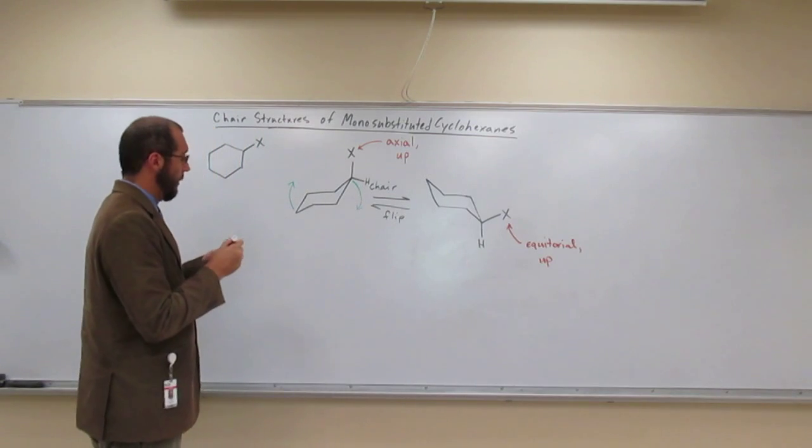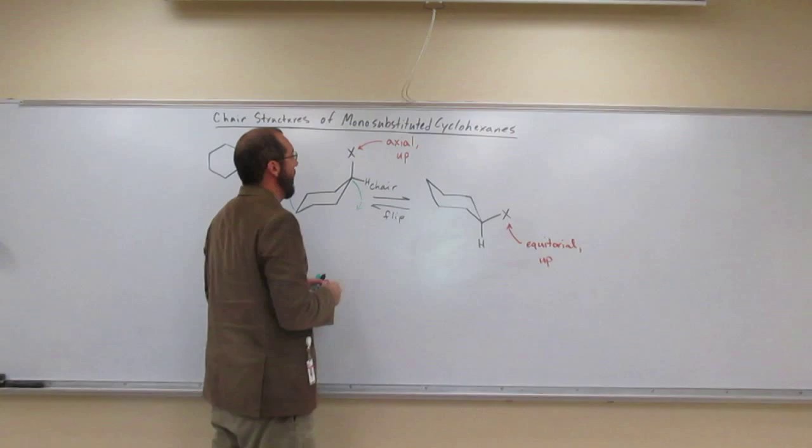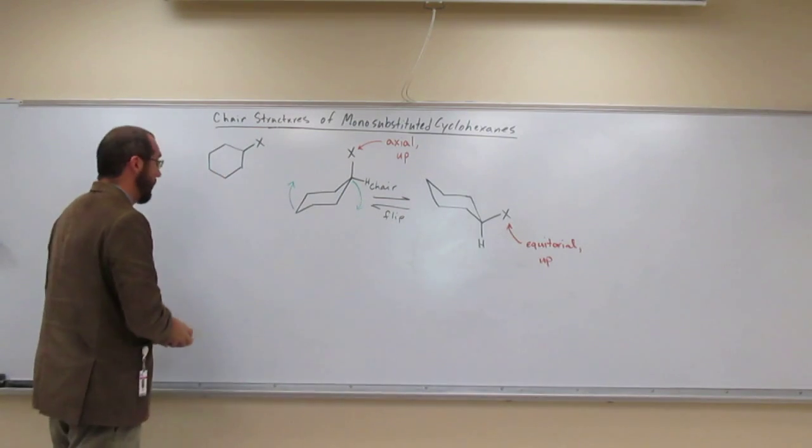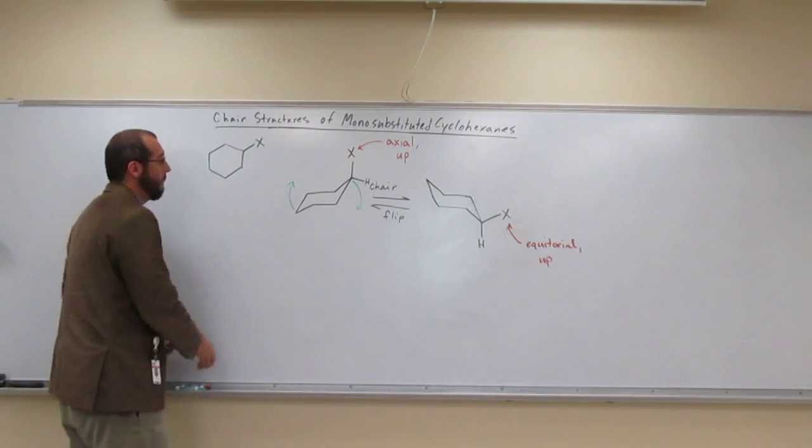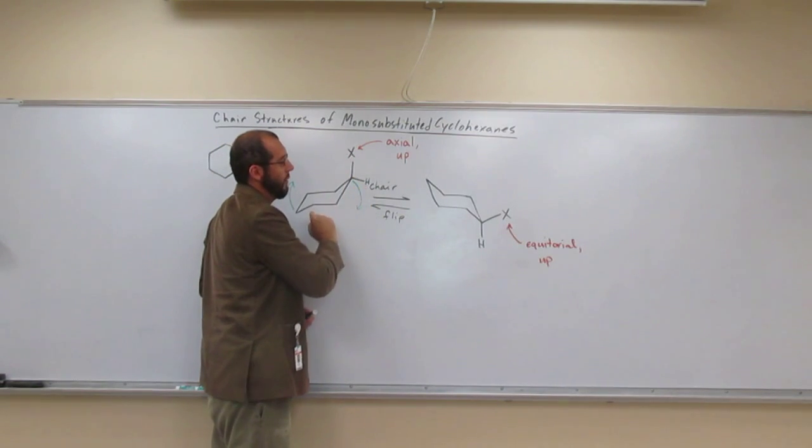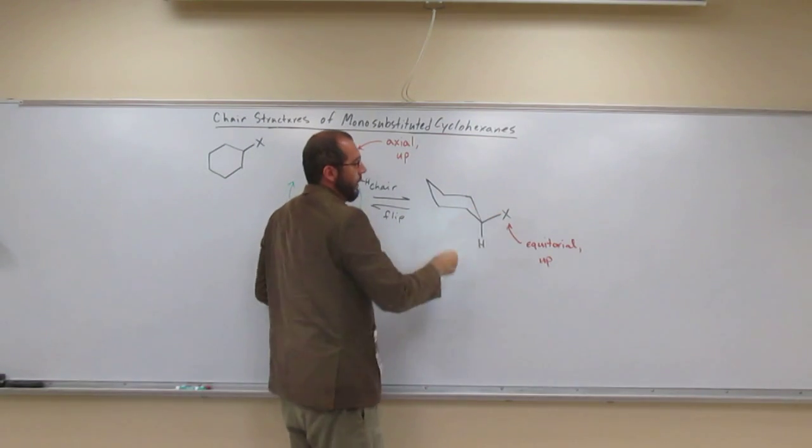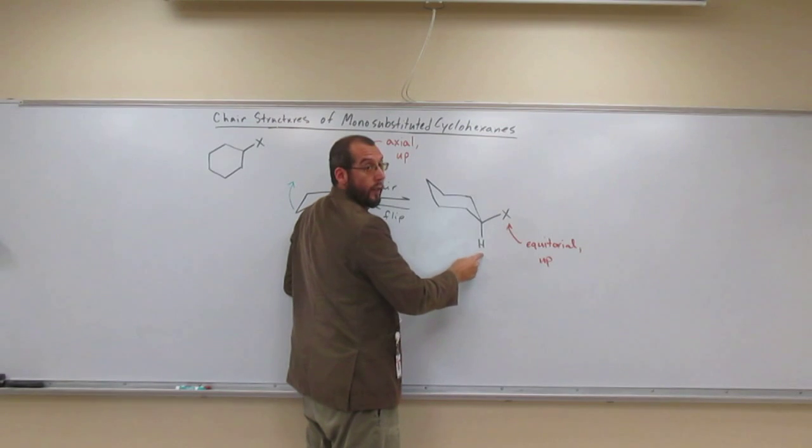So it goes from axial to equatorial, but it stays up. And how can we justify that, the up part? Because X is above the hydrogen there. So it's up there. And of course, it's axial. We all know that. This one is equatorial, and X is still above the hydrogen. So it's up.